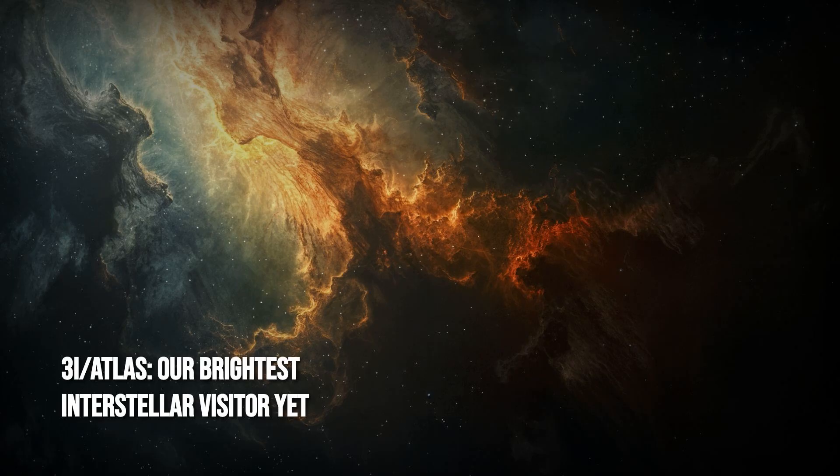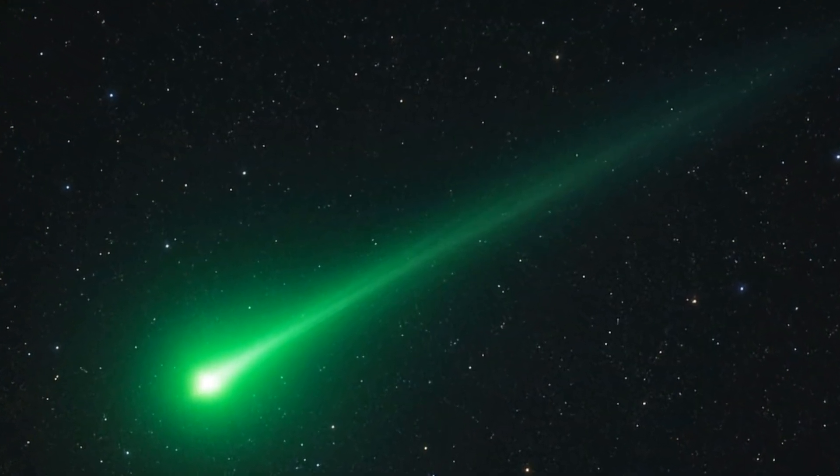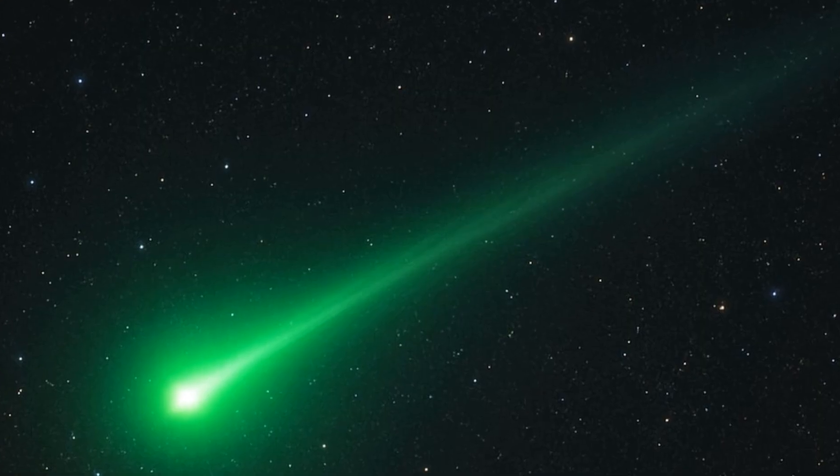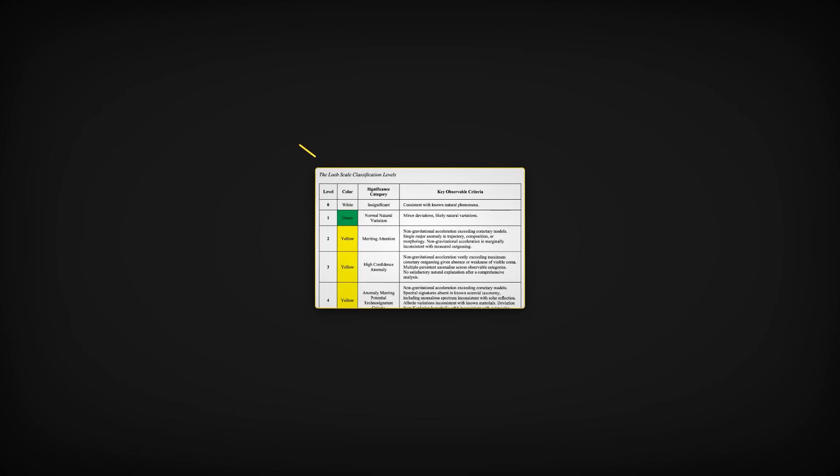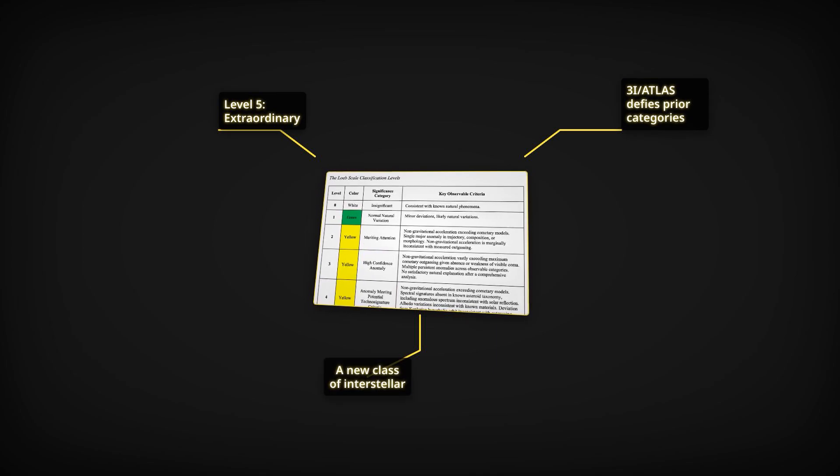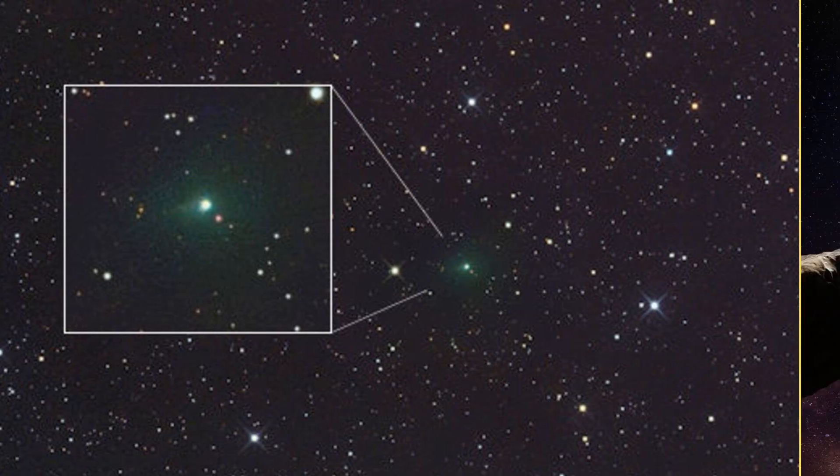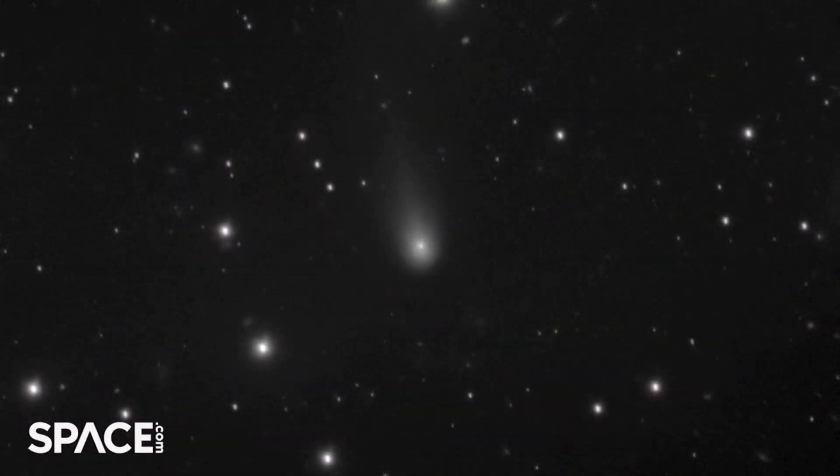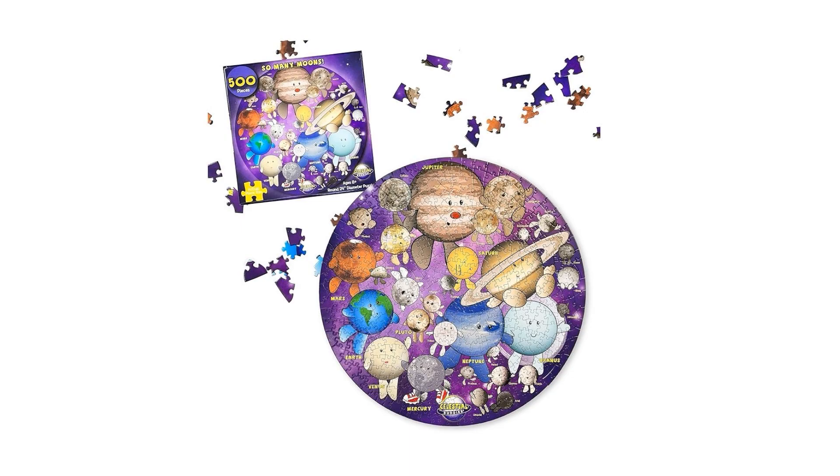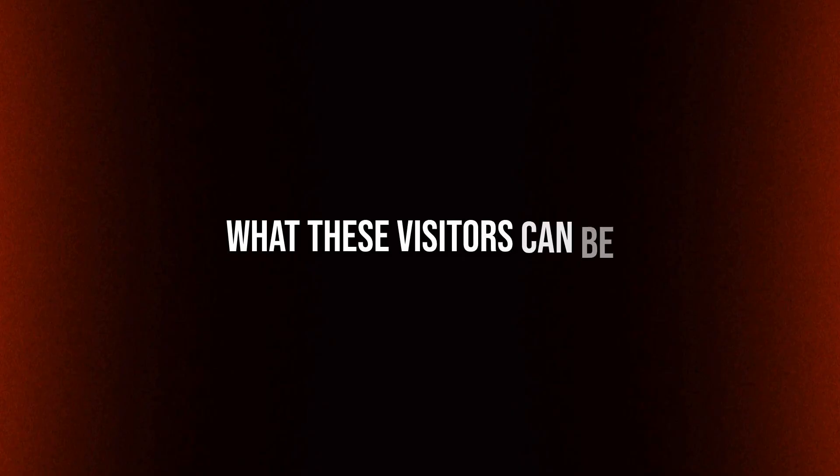Now, with 3I/Atlas, the script is changing again. Its coma is not only enormous but chemically distinct, showing high levels of carbon dioxide and a green glow from C2 molecules. The brightness is rising much faster than Borisov's and behaving nothing like Oumuamua's flat profile. Instead of fitting neatly into the categories set by its predecessors, 3I/Atlas is carving out a space somewhere in between, a hybrid with the unpredictable activity of a comet and the wild, unbound trajectory of a true interstellar wanderer. Each new data point is forcing astronomers to rethink what these visitors can be.